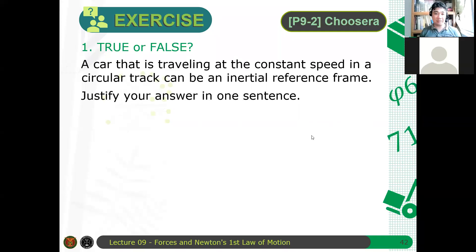Okay, so let's have an example here. So true or false, a car that is traveling at constant speed in a circular track can be an inertial reference frame. Justify your answer. Is this true or false? Okay, that's the first question. Get a sheet of paper if you want to. If you want to see it, check your answer.